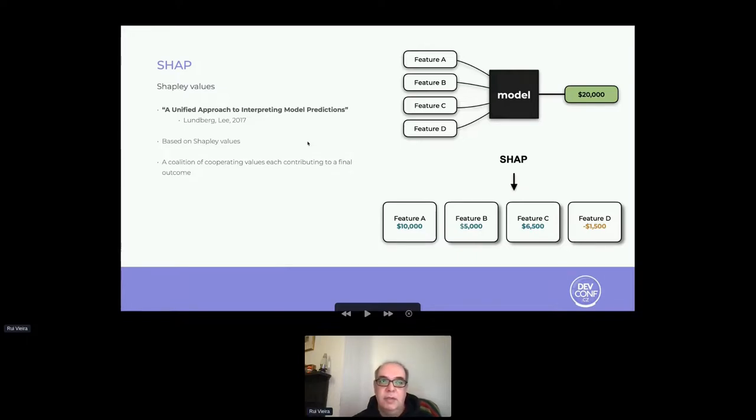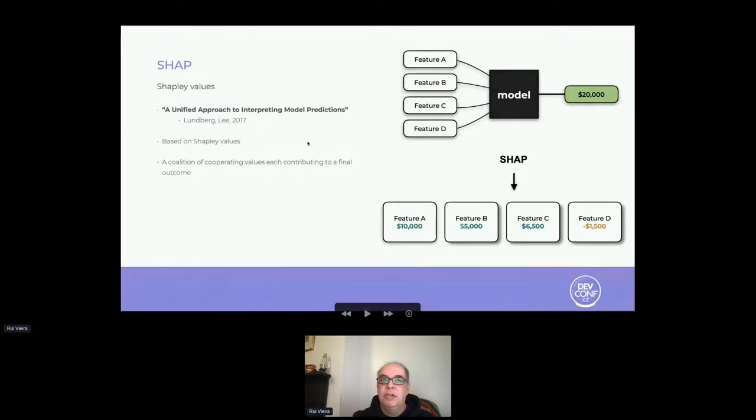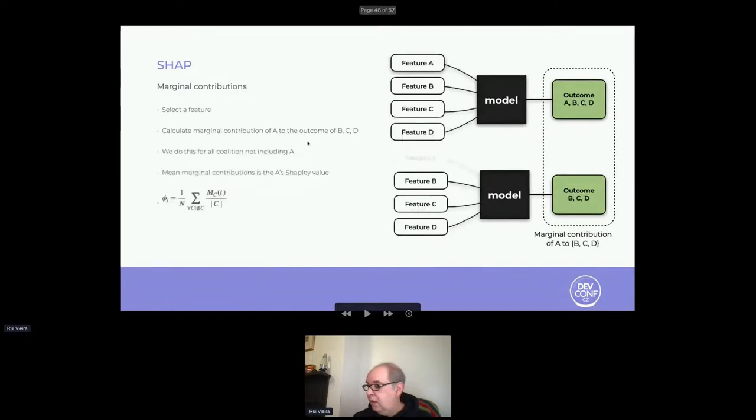SHAP was initially published by Lundberg and Lee in 2017, and it relies heavily on a concept from game theory called Shapley values. Shapley values, simply put, try to establish how much the player in each coalition contributed to the final result. To apply the concept of Shapley values, we start by considering each feature as a player and the prediction as the result of a game. We assume that we have a model where we can easily remove features and get an outcome based on a partial input. We calculate the difference between the outcome from all features and the outcome of a coalition without a certain feature, and that will give us the marginal contribution of that coalition. If we calculate the outcomes of all coalitions that differ by having a feature or not, the mean marginal contribution will be the Shapley value of that feature.